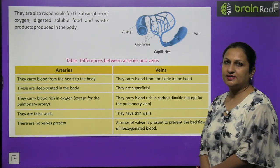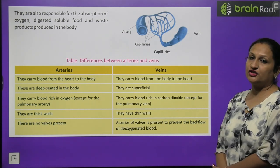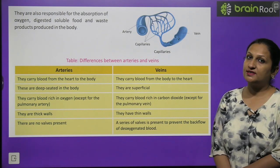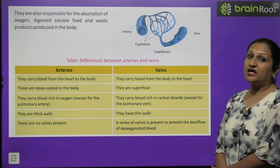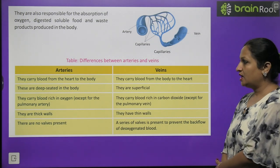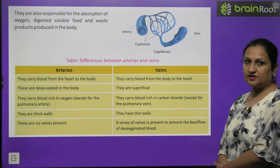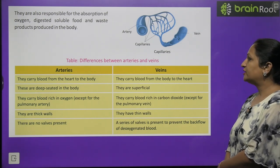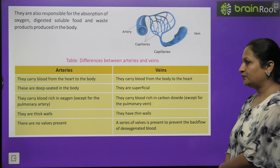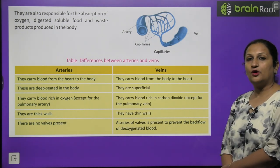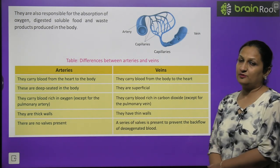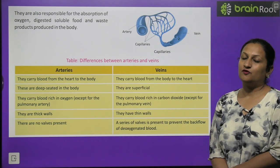The key difference between arteries and veins: arteries carry blood away from the heart, while veins carry blood towards the heart. Arteries are deep-sided, while veins are superficial — you can see them in your hands. Arteries carry blood rich in oxygen (except the pulmonary artery), while veins carry blood rich in carbon dioxide (except the pulmonary vein). Arteries have thick walls; veins have thinner walls but have valves to prevent backflow.